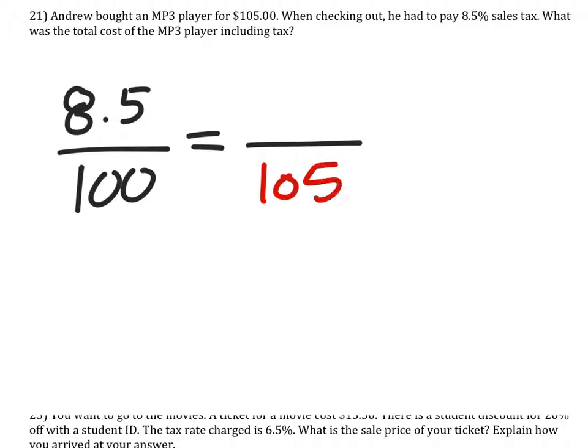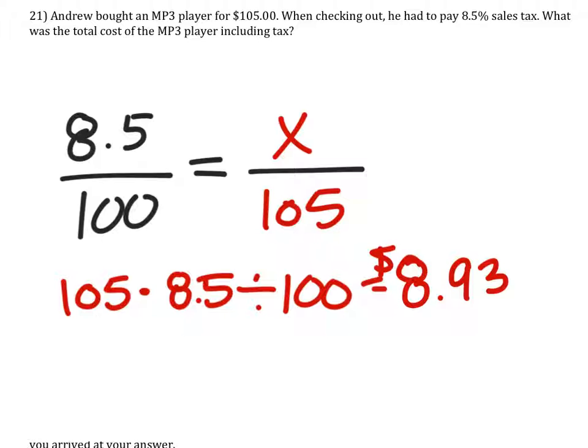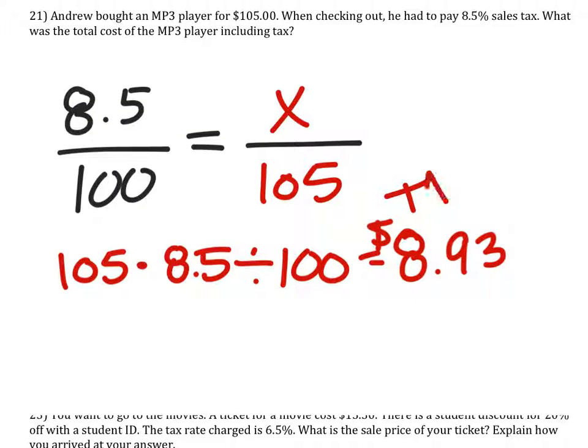And it's out of the $105, so we will take 105 times 8.5 divided by 100, and this equals $8.93. That's how much the tax is. So this is our tax.